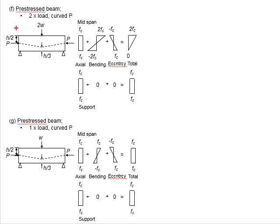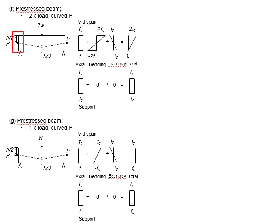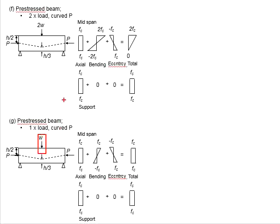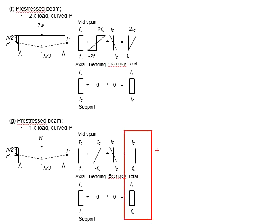However, for the beam at the end span, there will be only axial compression. No moment develops at the support, so there is no effect of bending. There is also no eccentricity at the support, so the effect of eccentricity is not considered. Therefore, the final stress at the support section equals only the axial compression. In the case where the vertical force is only one time the magnitude, the beam sections will have the stress profile as given.